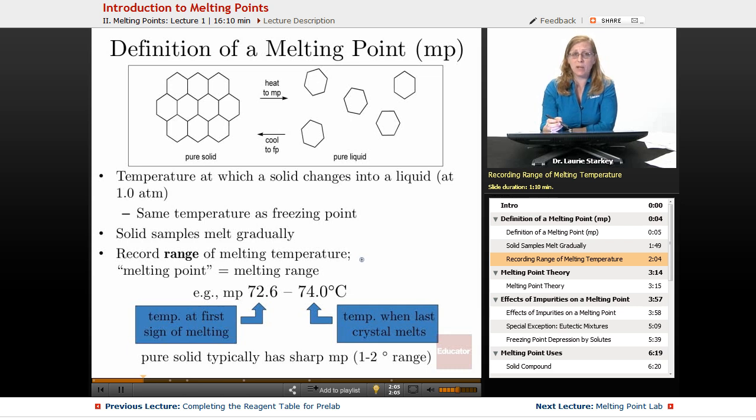And so when we take a melting point of a solid sample, we're actually going to be recording a range of melting temperatures. It's not really a point that we record in our notebooks. And the range is going to be, for example, we might say the melting point of our sample was 72.6 to 74 degrees C.